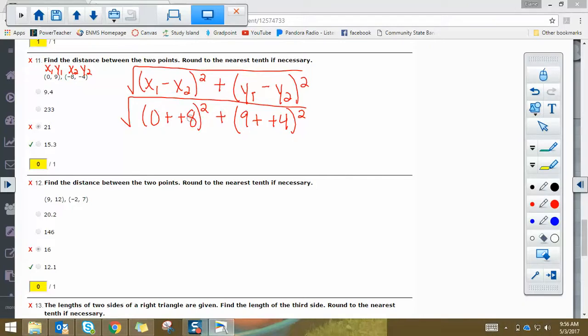0 plus 8 is 8, 8 squared is 64. 9 plus 4 is 13, 13 squared is 169. Now you have to still square root all that, but you have to add it first. Order of operations, a square root is kind of like a parenthesis, so you have to clean up everything underneath here first before you can square root it. So 64 plus 169 is 233.